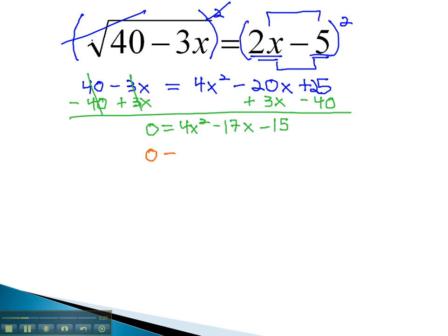Once it equals 0, we'll want to factor the equation. To review factoring, you can watch some of the previous videos on factoring. This equation ends up factoring to 4x plus 3 times x minus 5.